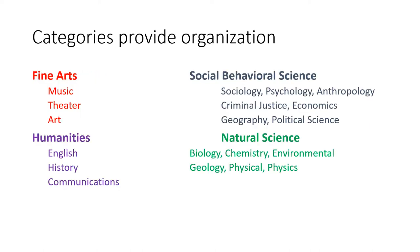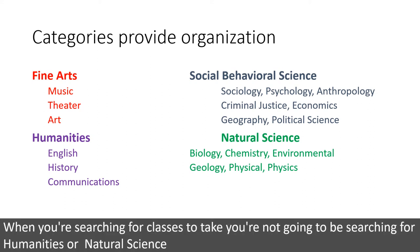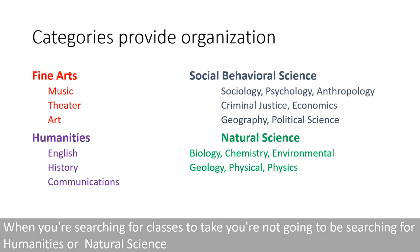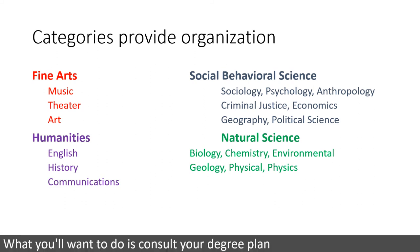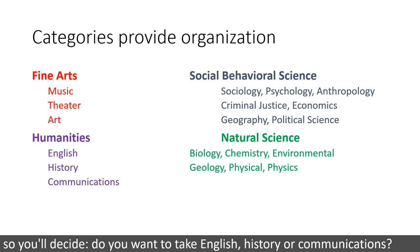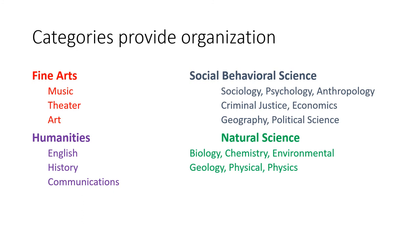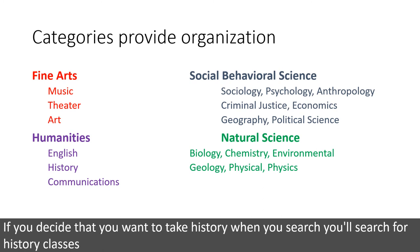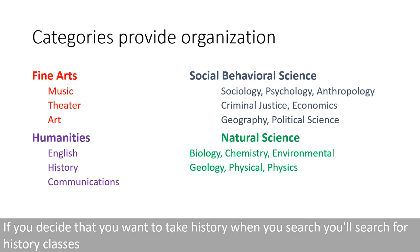Categories provide organization. When you're searching for classes to take, you're not going to be searching for Humanities or Natural Science. What you'll want to do is consult your degree plan, and you'll see that you have to take a Humanities course. So you'll decide: do you want to take an English, a History, or a Communications? If you decide that you want to take History, when you go to search, you will search for History classes.